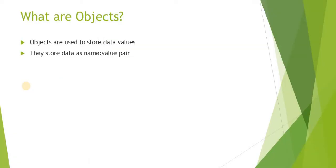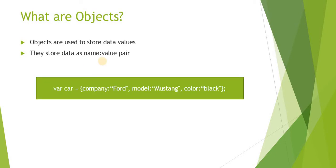First of all, what are objects? Objects are used to store data values. These are similar to variables in that they are used to store values. The only difference is we store values in objects as name-value pairs. For example, I have declared an object called 'car' with properties: company with value 'Ford', model with value 'Mustang', and color with value 'Black'. These — company, model, and color — are called properties, and the values are Ford, Mustang, and Black.